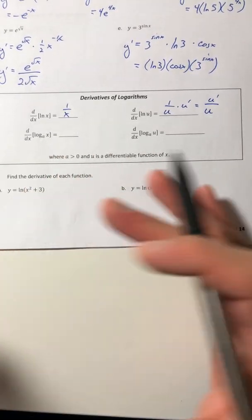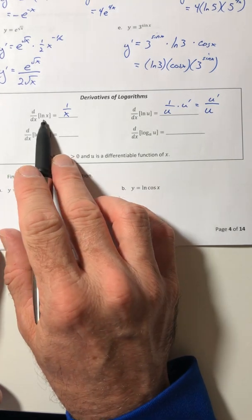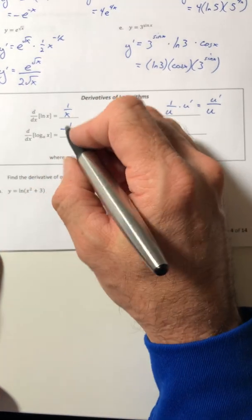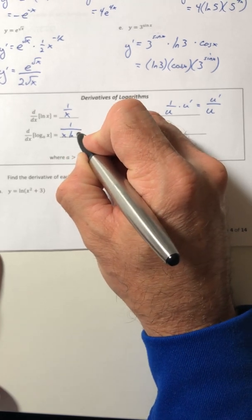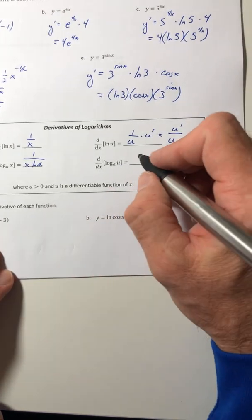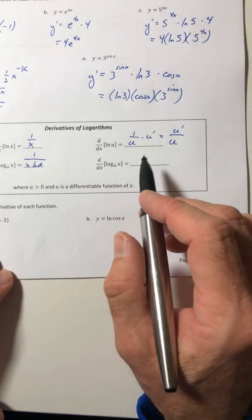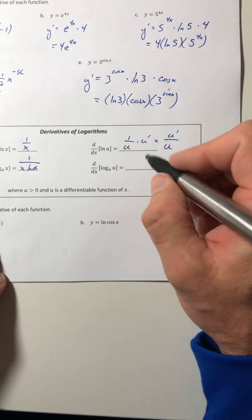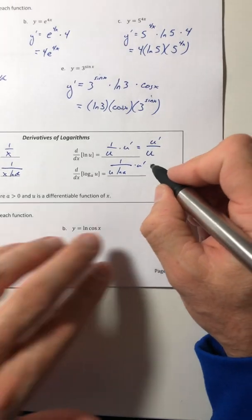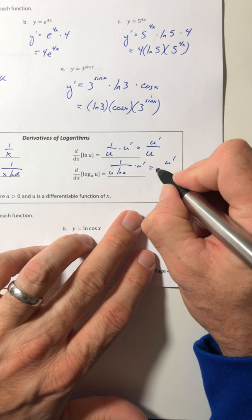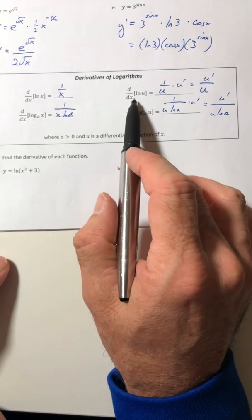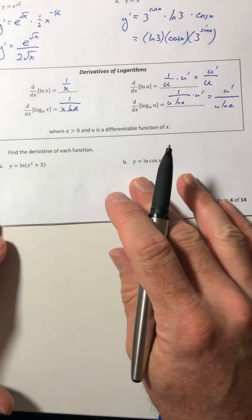Okay, so we can now generalize it to logs of any base instead of log base e or the ln. So if it's log base a of just x, it's one over x, and then you have to multiply in the denominator by ln of a. So ln of the base. And then if it's some other function in terms of x, so it's not an x in there, it's like x squared or sine of x or something like that, it's one over u ln of a times the u prime, or still the u prime on top over u ln of a.